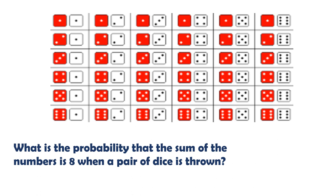What is the probability that the sum of the numbers is 8 when a pair of dice is thrown? The combinations that give a sum of 8 are: 6+2, 5+3, 4+4, 3+5, and 2+6 — that's 5 outcomes. The total sample space is 36. So the answer is 5 over 36.